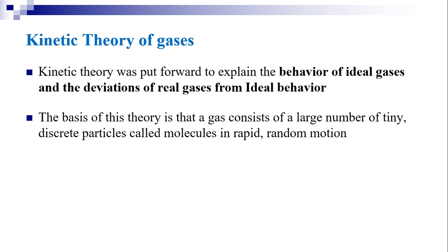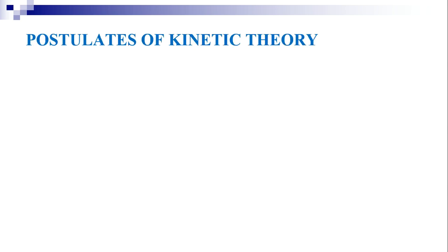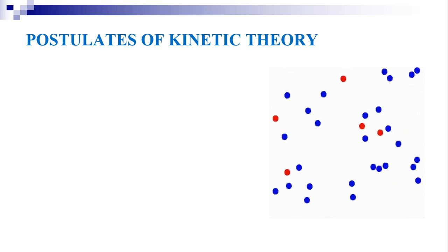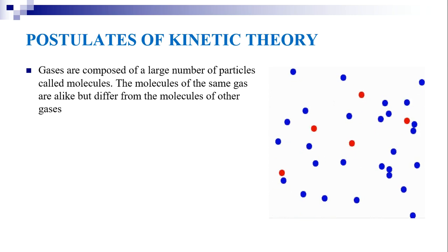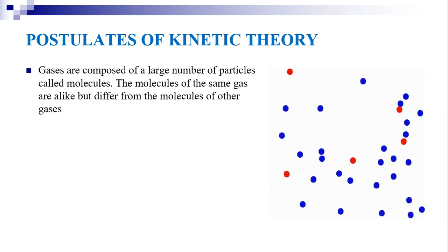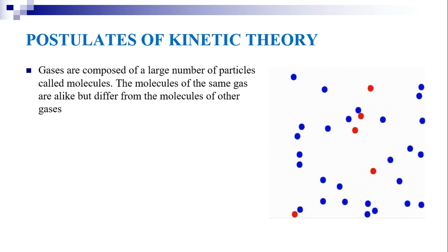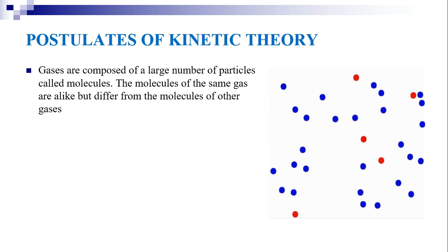Kinetic theory was put forward to explain the behavior of ideal gases and deviations of real gases from ideal behavior. The basis of this theory is that a gas consists of a large number of tiny discrete particles called molecules in rapid random motion. The kinetic theory postulates are useful in understanding macroscopic properties from microscopic properties. Now let us look into the postulates of kinetic theory — the following are the assumptions on which kinetic theory is based.